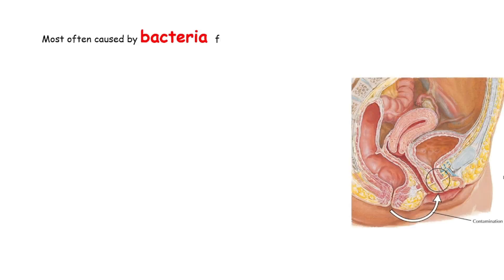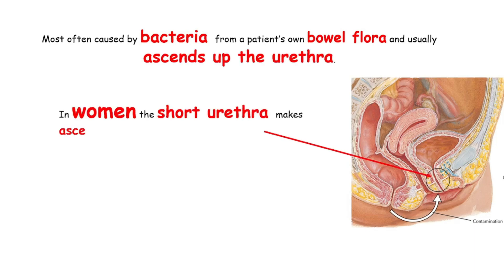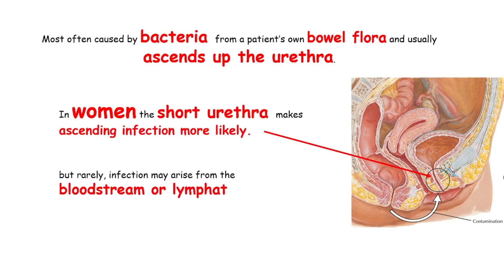Infection is most often caused by bacteria from a patient's own bowel flora and usually ascends up the urethra. In women, the short urethra makes ascending infection more likely, but rarely infection may arise from the bloodstream or lymphatics, or by direct extension such as from a vesicocolic fistula.